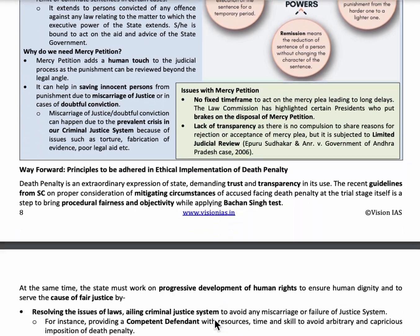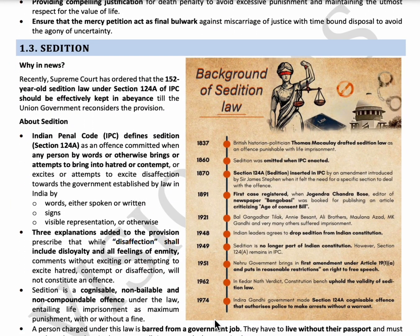The next topic is sedition. Sedition means an offense committed when a person, by words, signs, or visual representation, attempts to incite people against the government. The sedition law is defined under Section 124A of the Indian Penal Code of 1860. Freedom fighters like Bal Gangadhar Tilak, Annie Besant, Ali Brothers, Maulana Azad, and Mahatma Gandhi were imprisoned under this law. The Supreme Court has suspended the sedition law until the union government makes changes or reviews it.